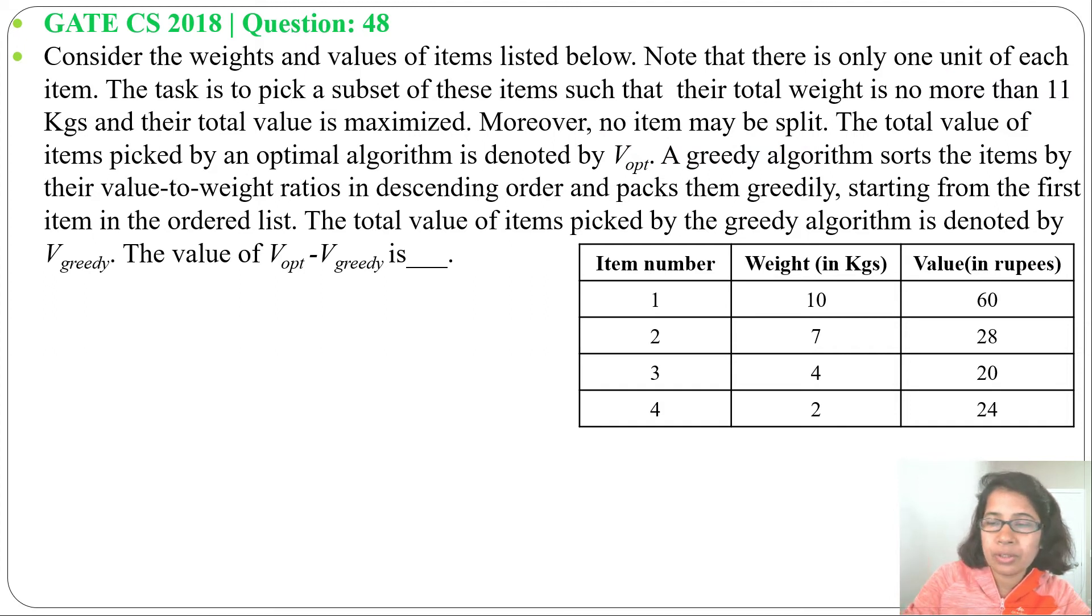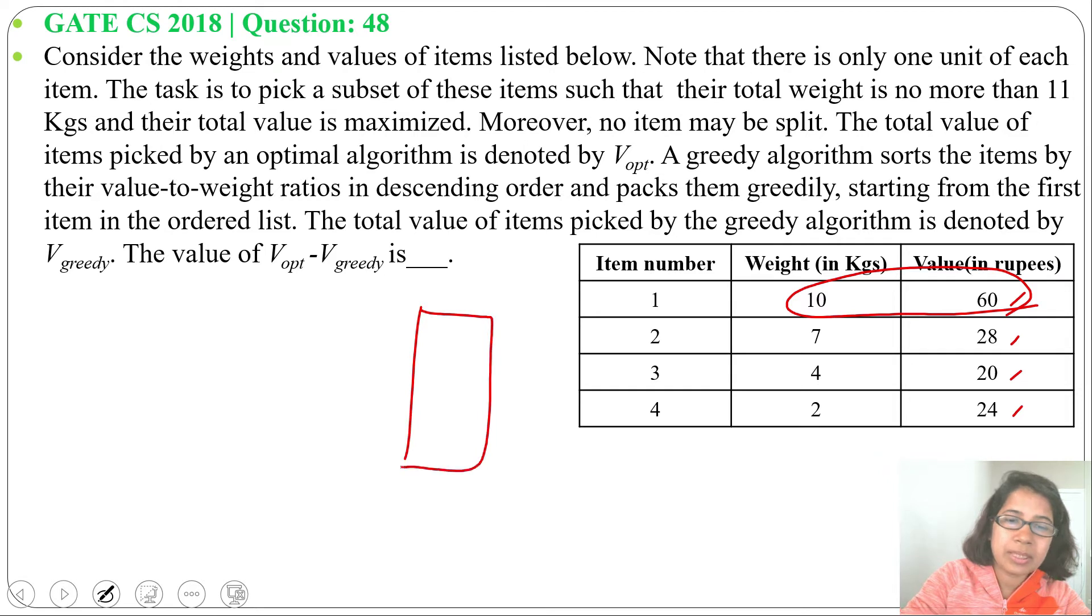First we will find optimal value, then we will find the greedy value. For optimal value, first we will check the values. Highest value is 60, then 28, then 24, then 20. So first we will pick item 1. Total capacity is 11, and item 1 is 10 kg.